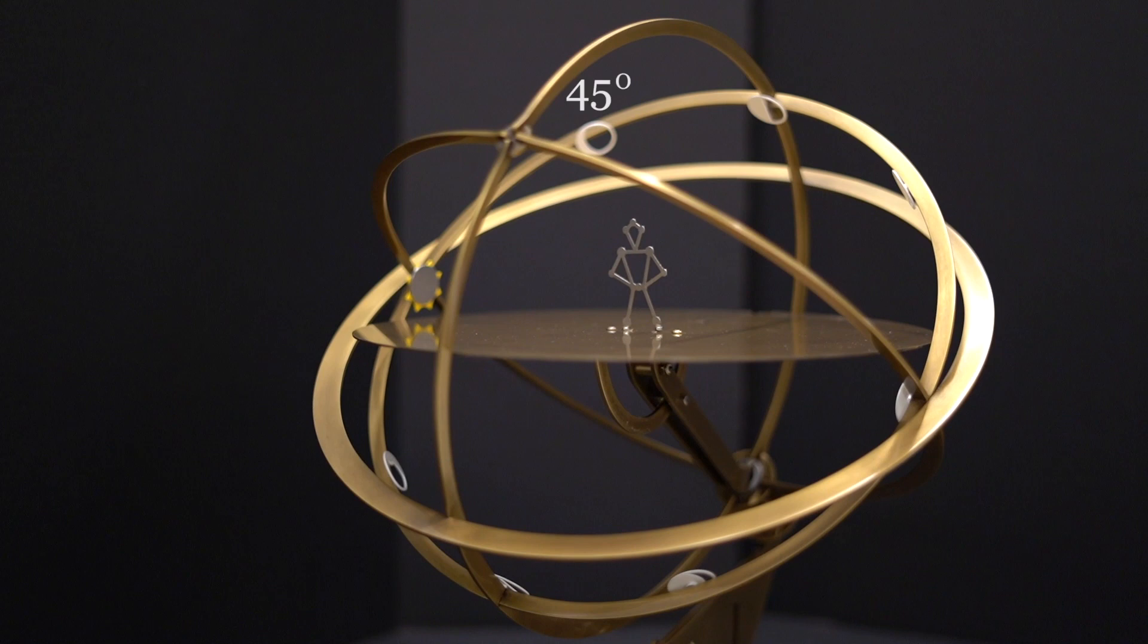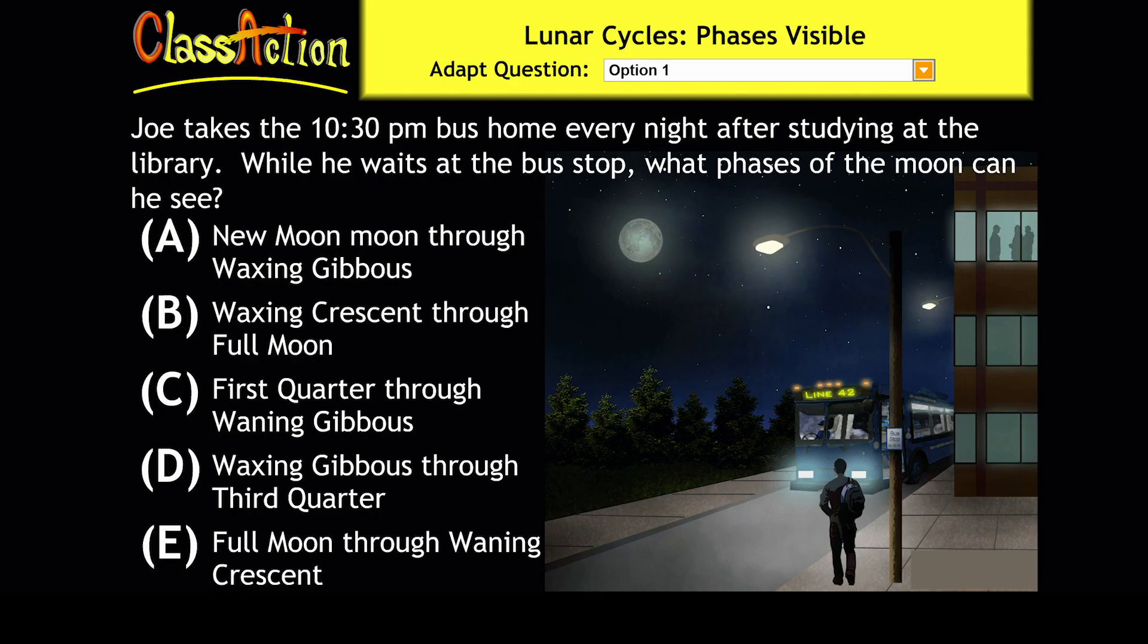Waning crescent, 45 degrees. Third quarter, 90 degrees. Waning gibbous, 135 degrees. And then full moon at the western horizon, which has just set.